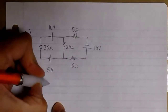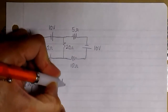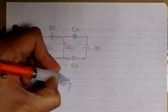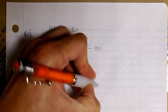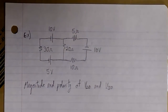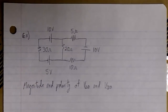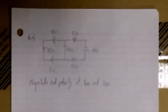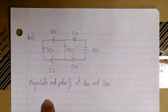Hello. In this video we will be discussing loop equations and we will be solving two examples using loop equations. In this first example we have a circuit with two loops and we're interested in finding the voltage magnitude and polarity of the voltage across the 20 ohm resistor and the 30 ohm resistor. We're going to be using loop equations to solve this problem.